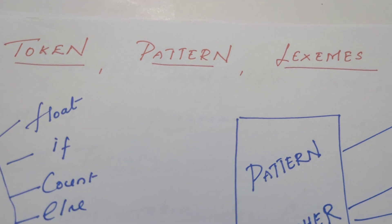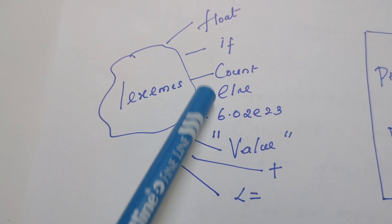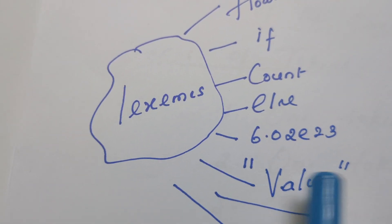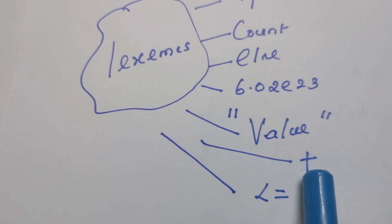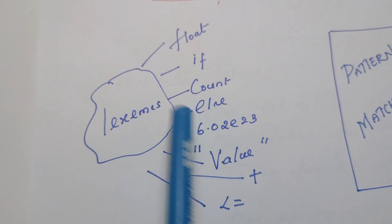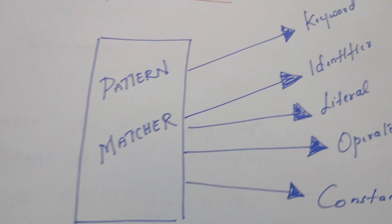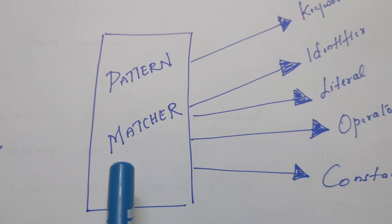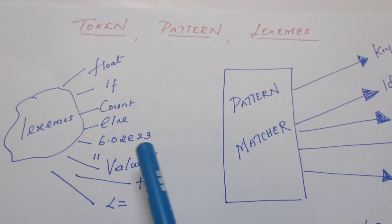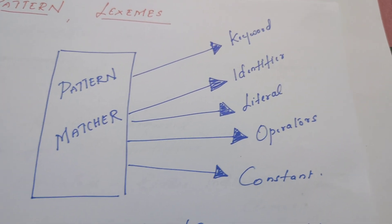Look into this diagram — there is a group of lexemes. These are examples for lexemes: float, if, count, else, some numeric constant, a string enclosed within double quotes, a plus operator, and a less-than-or-equal-to comparison operator. These lexemes are fed one by one into the pattern matcher, which is a software module that matches the pattern of a token against these lexemes.